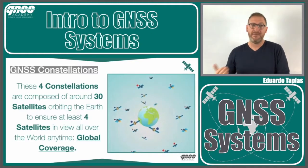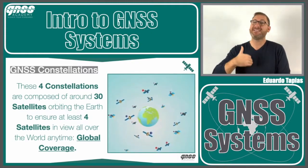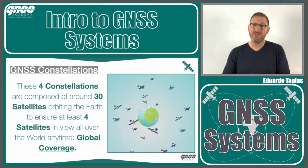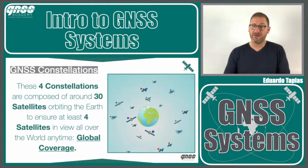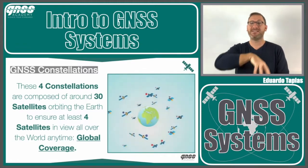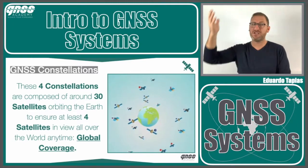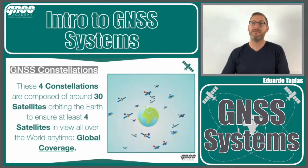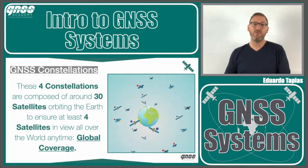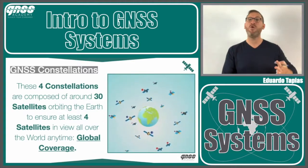When designing a constellation, one of the key points to consider is the geometry — specifically the symmetry of the geometry — in order to make sure that at every moment and location we have at least four satellites in view.